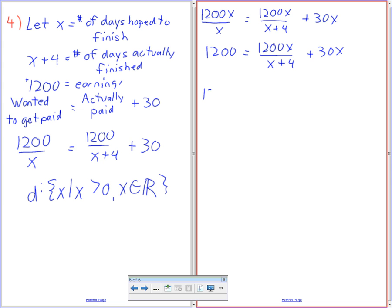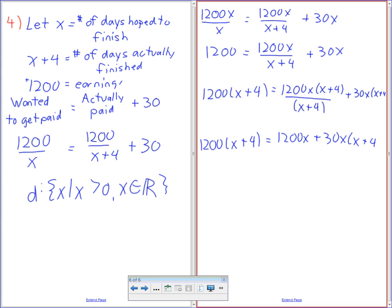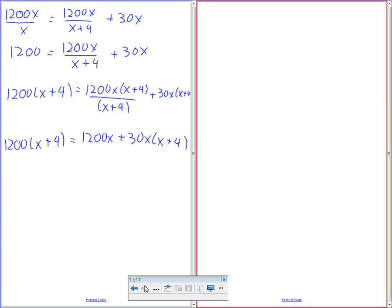I'm going to multiply everything by x plus 4, so that's 1200x plus 4 equals 1200x times x plus 4 all over x plus 4 plus 30x bracket x plus 4. So that should equal 1200x plus 4 equals 1200x plus 30x times x plus 4. Did everyone get that far?